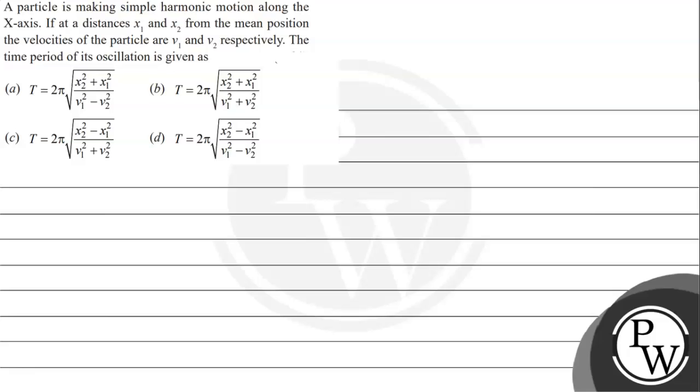Hello, let's read the given question. The question says: a particle is making simple harmonic motion along the x-axis. If at distances x1 and x2 from the mean position, the velocities of the particle are v1 and v2 respectively, the time period of oscillation is given as...